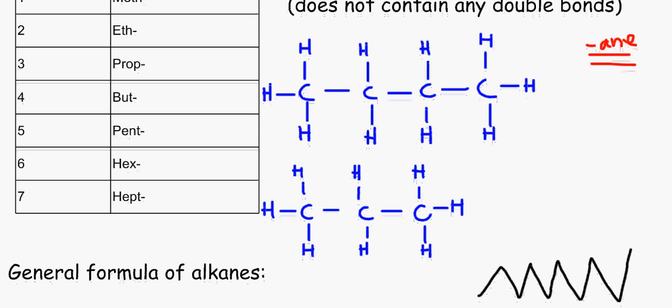This one over here has got 1, 2, 3, 4, 5, 6, 7, 8, 9, 10 carbon atoms and although I haven't actually written it over here, it would actually be called decane. Decane, because the prefix for 10 is dec. You do need to learn this, so I will get ahead and crack on revising it.